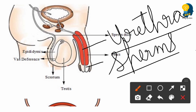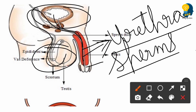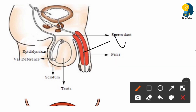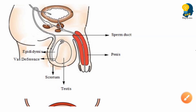The urethra is a common passage to pass both urine and sperms. Urine is present in the urinary bladder and sperms are present in the testis. When sperms need to pass, they travel through the urethra; when urine needs to pass, it also passes through the urethra. So the urethra acts as a common passage for both urine from the urinary bladder and sperms from the testis.